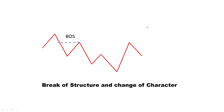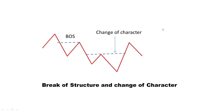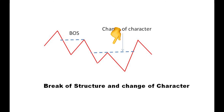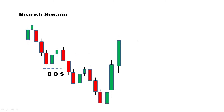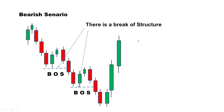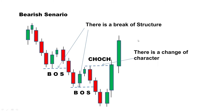A valid order block must lead to a break of structure or a change of character. It is important to know when a change of character is taking place. Knowing this helps you know when a price moves from a bearish to a bullish trade, or from a bullish to a bearish trade. Note that an order block creates an imbalance or inefficiency, a break of structure, or a change of character in the current market.